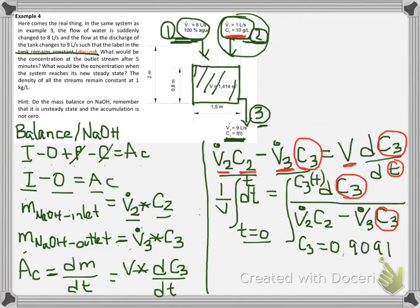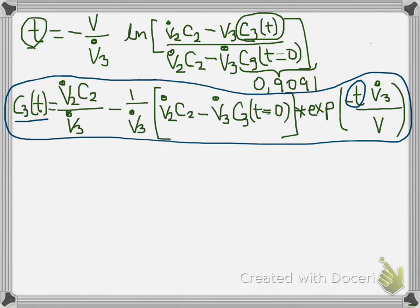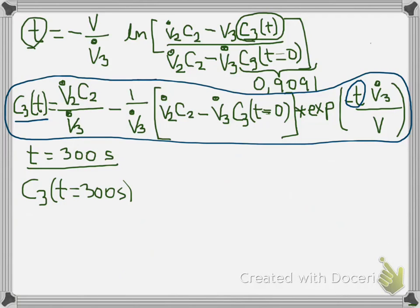Now the question is: what would be the concentration of the outlet stream after 5 minutes? We now have an equation to solve that. At time equals 5 minutes — that means time equals 300 seconds — discuss why these units are the ones that must be used. Substituting all the information that we know, we can find that the concentration at the outlet stream when time equals 300 seconds is 1.081 grams per liter.